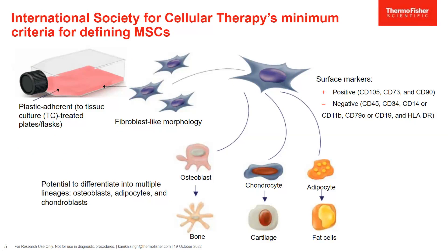As per the guidelines of the International Society for Cell and Gene Therapy, mesenchymal stromal cells, or MSCs, have a fibroblast-like morphology. These cells can be grown on tissue culture-treated surfaces and are adherent in nature. They express certain CD markers like CD105, CD73, and CD90, and do not have certain markers like CD45, CD34, HLA-DR, etc. on their surface. They also have a potential to differentiate into multiple lineages like osteoblasts, adipocytes, and chondroblasts.